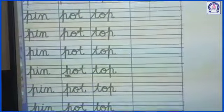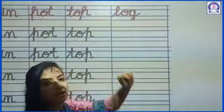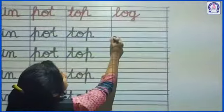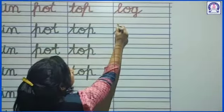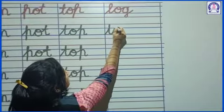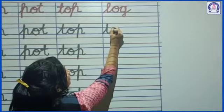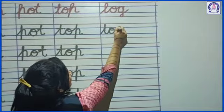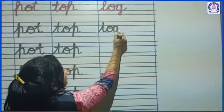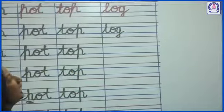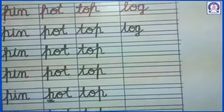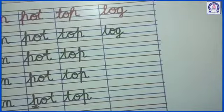Log. Okay. Next is L-O-G log. First we have to write L. Then O. O. Then G. G. L-O-G log. L-O-G log.